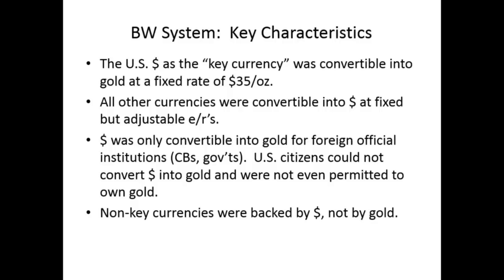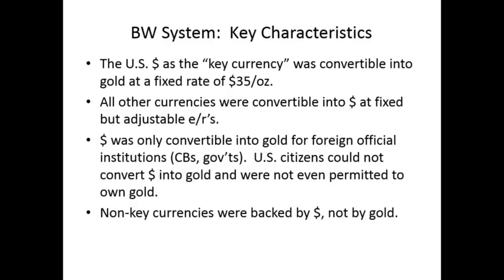How did the Bretton Woods system operate? Here were the key characteristics. The U.S. dollar was given the role of the key currency — it was the only currency under the Bretton Woods system directly convertible into gold at the devalued rate of $35 per ounce. But you and I, or our parents and grandparents, couldn't get gold for their dollars — they couldn't convert their dollars into gold.